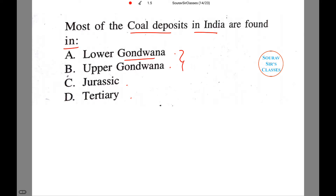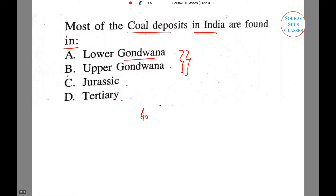Now you must be knowing that in India, Gondwana is very famous for coal deposits. So we know that the answer will be either lower or upper Gondwana. But before telling you the answer, let us first draw a distinction between Gondwana coal and tertiary coal.